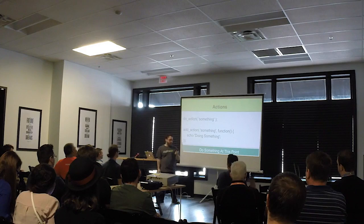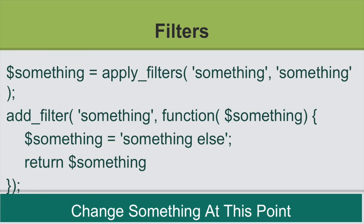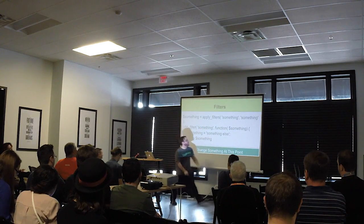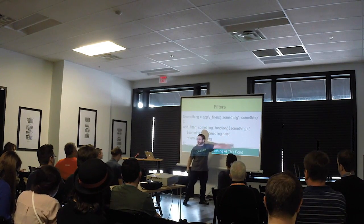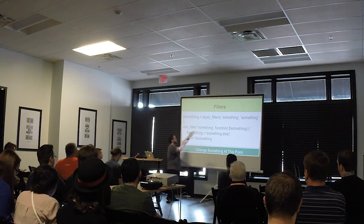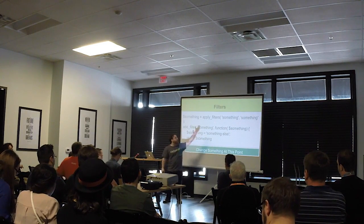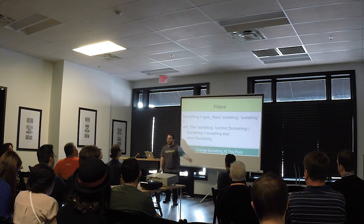Filters — we change something. apply_filters('something') — 'something' is the default. So if nobody hooks into this filter, we return 'something'. But because we've hooked in, we're able to modify this variable. We're able to say something equals something else. Return something. So now, wherever this outputs, we see something else.